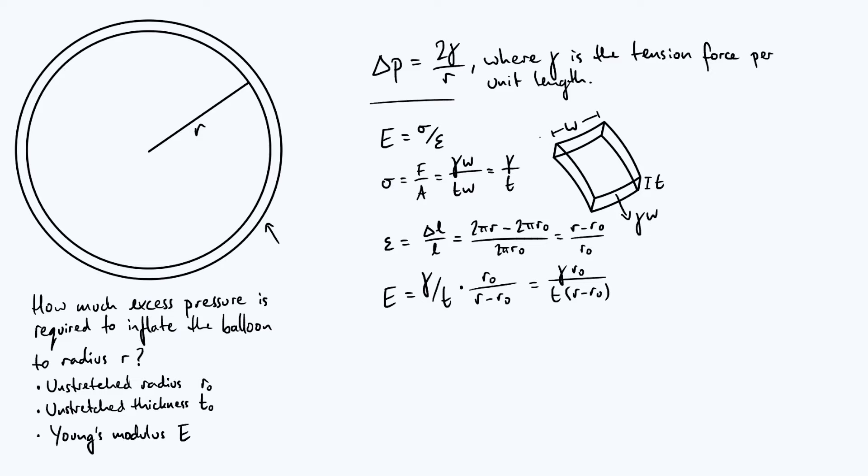What we ultimately care about is γ, the tension per unit length, so that we can plug it into our Δp equation. So just rearranging that equation to get γ on its own, you find that γ = ET(r - r₀)/r₀.